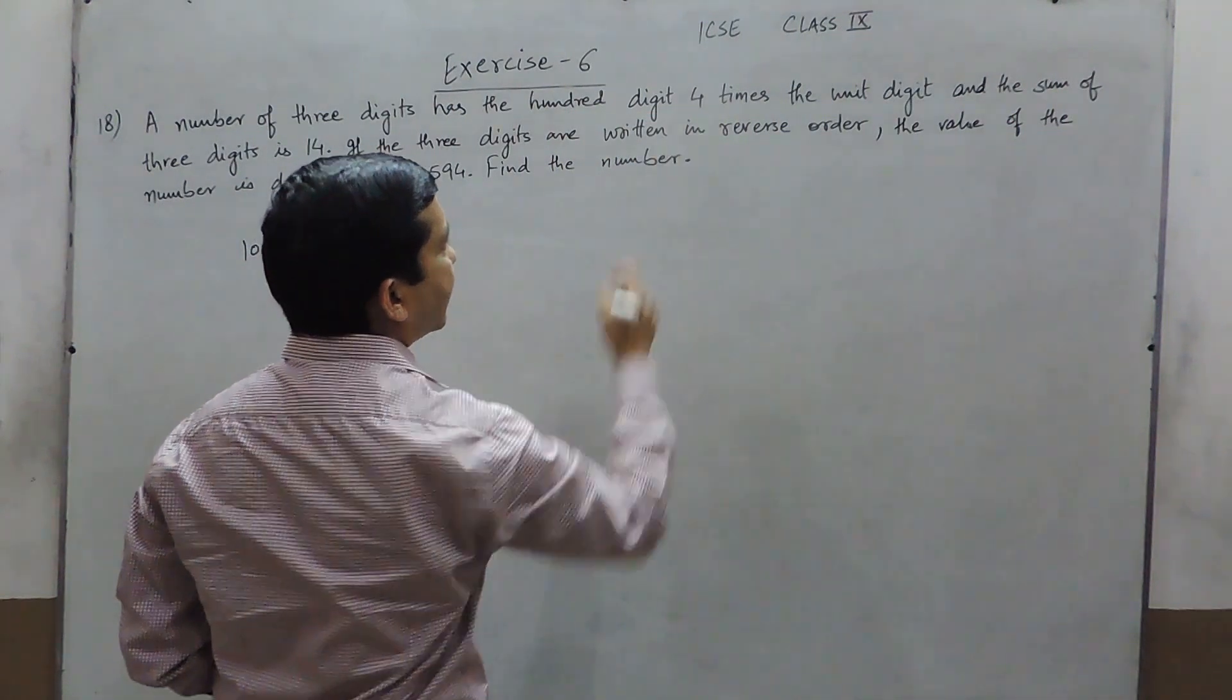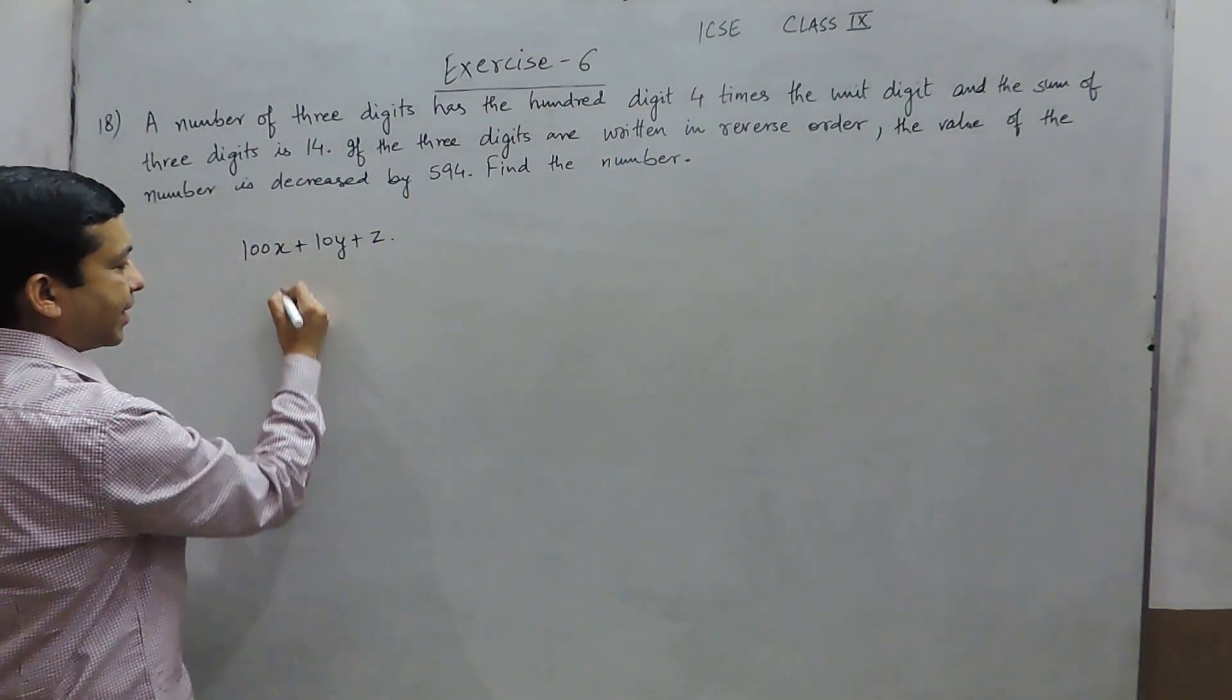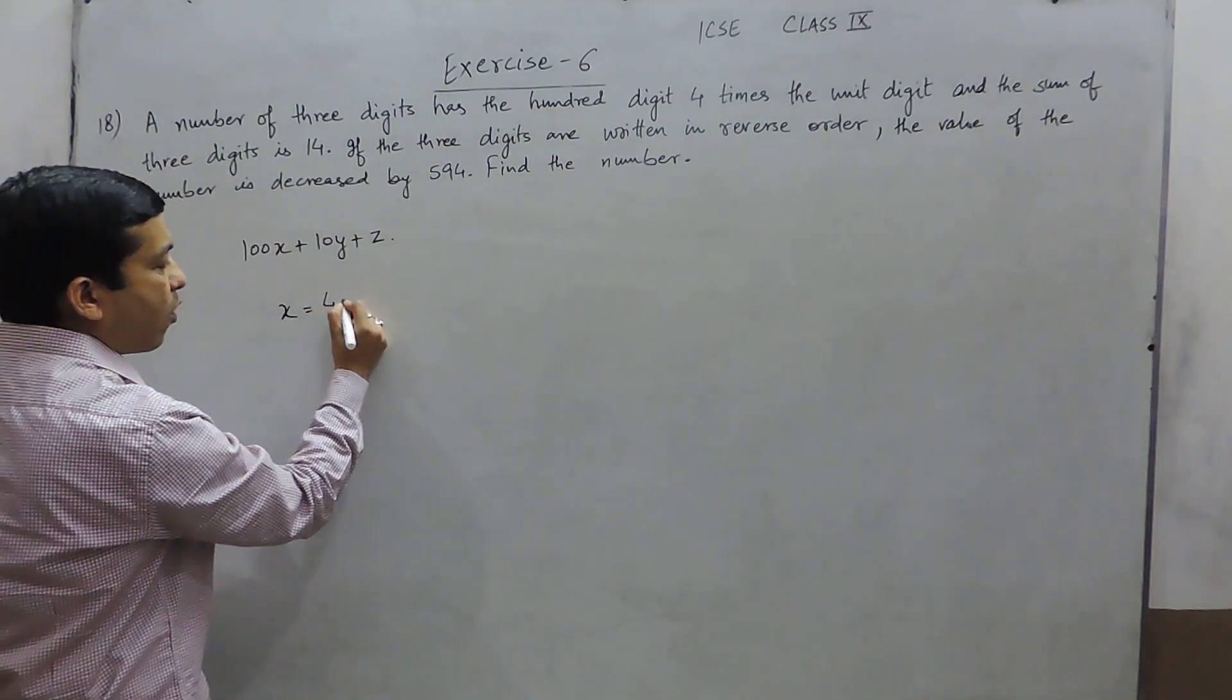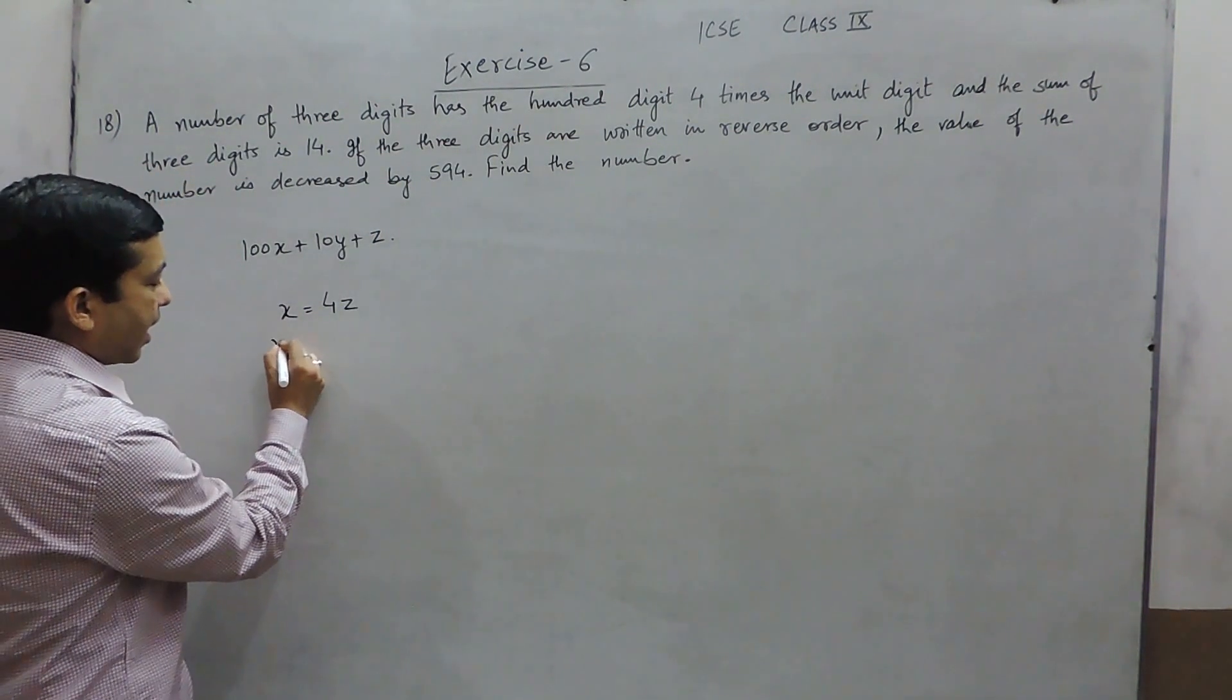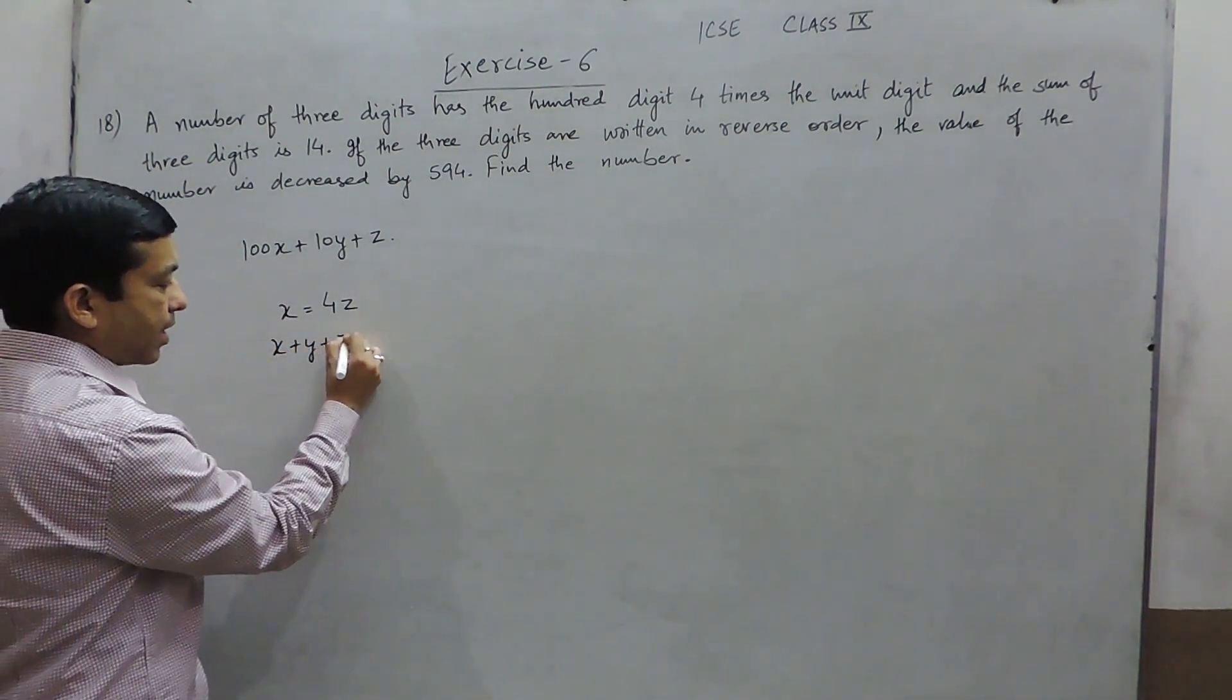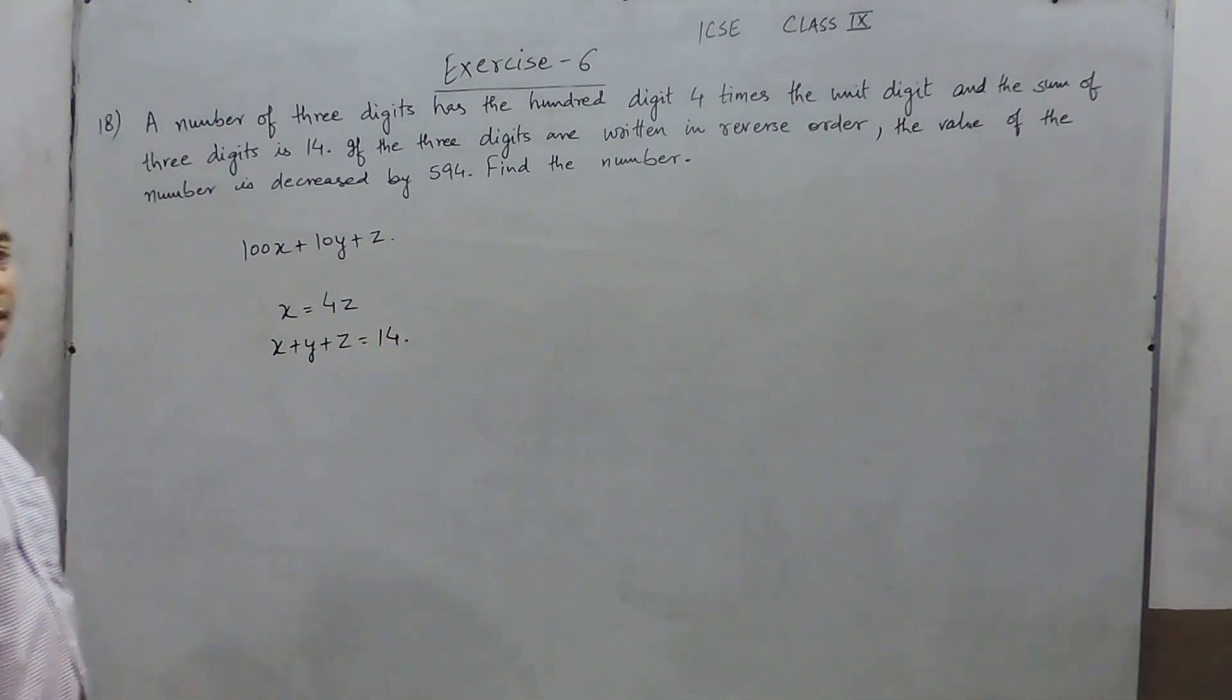The 100th digit is 4 times the unit's digit, meaning x equals 4 times z. And the sum of 3 digits is 14, that means x plus y plus z equals 14.